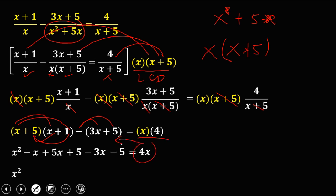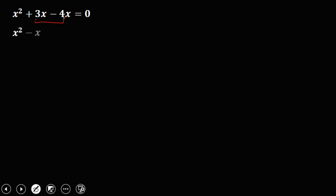Combine like terms and equate to zero. Transpose 4x to the left side: x plus 5x gives 6x, minus 3x gives positive 3x, and positive 5 minus 5 is 0. Transpose to get negative 4, equals 0. Simplify: we get x squared minus x equals 0. Factor out x: x times x minus 1 equals 0.